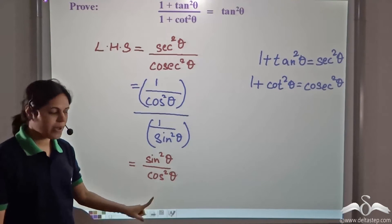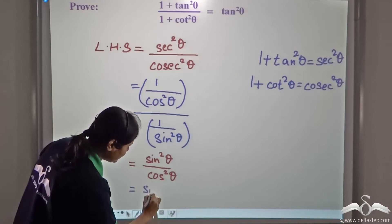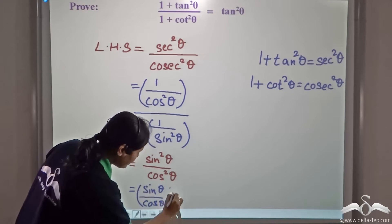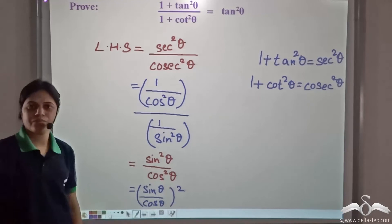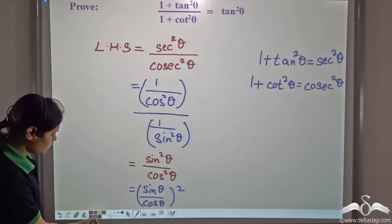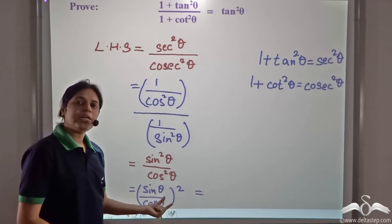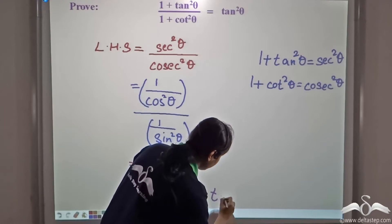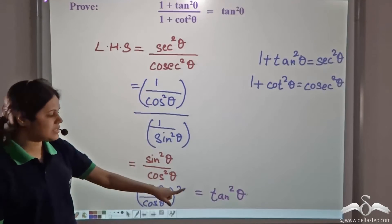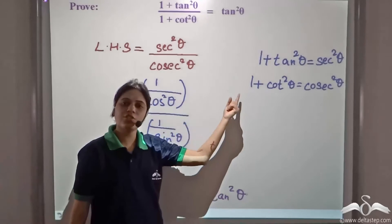Now, sin²θ / cos²θ can be written as (sinθ / cosθ)². And we know that sinθ / cosθ is tanθ. So this is equal to tan²θ. We have proved it using these two identities.